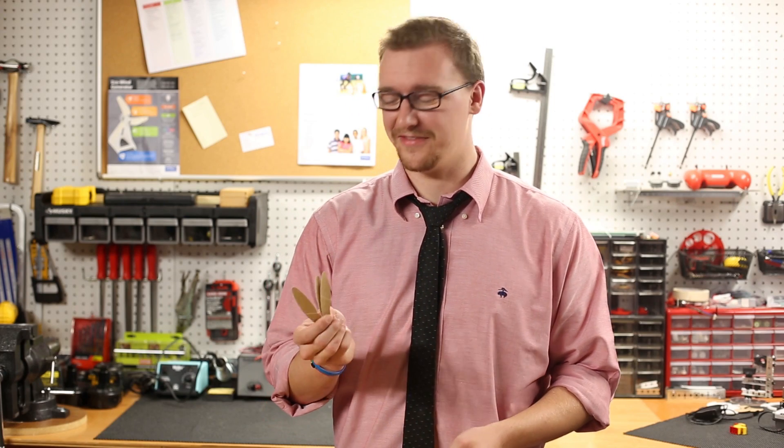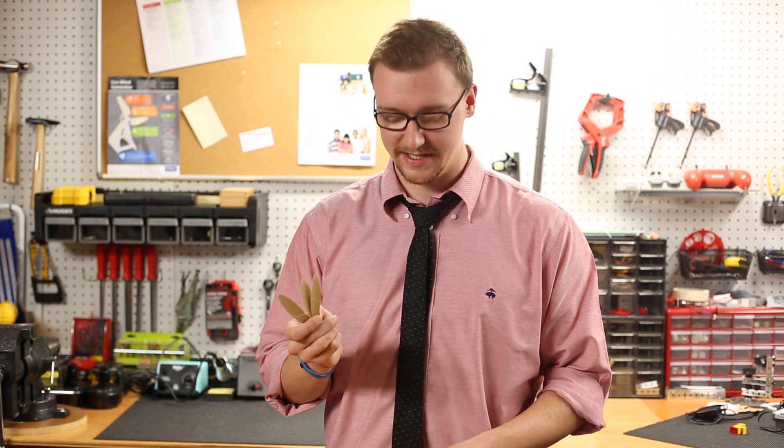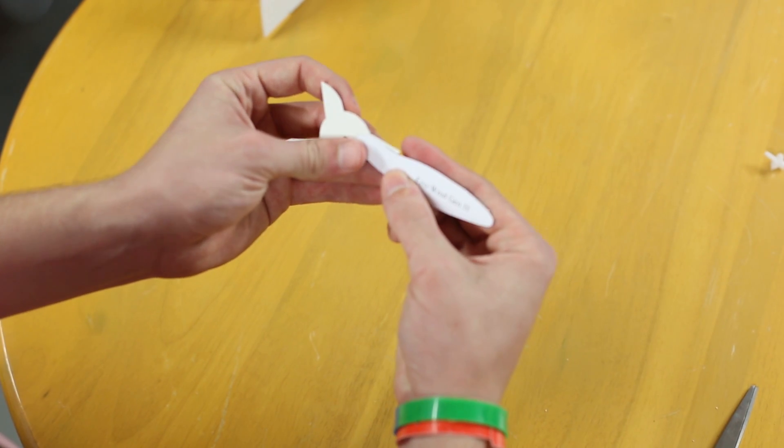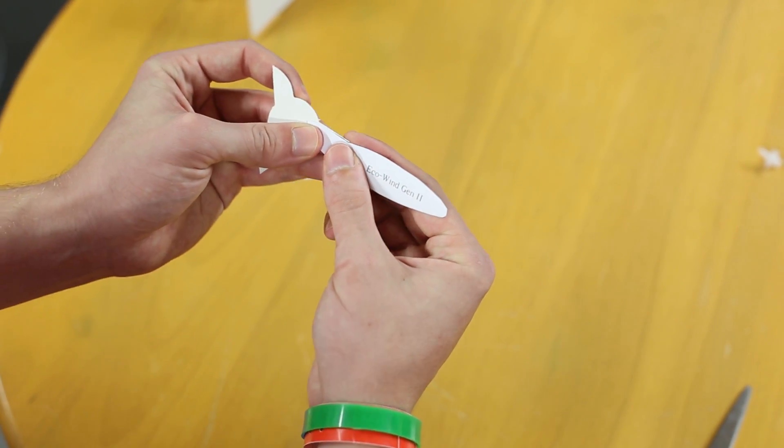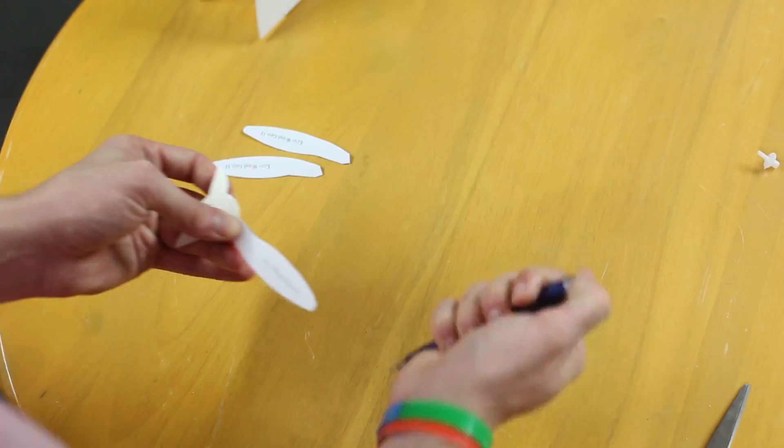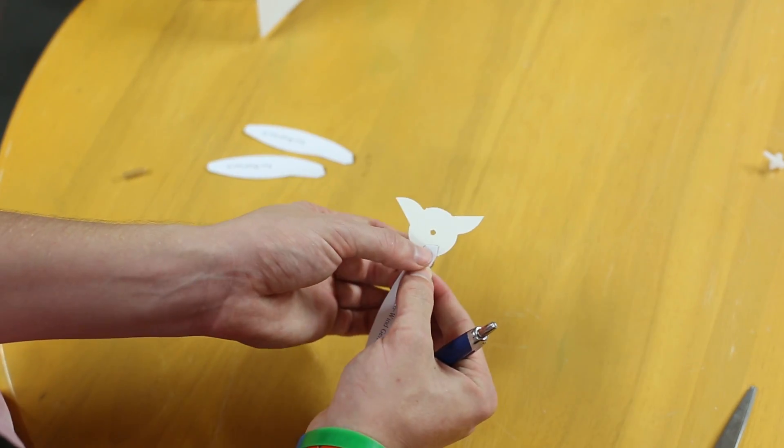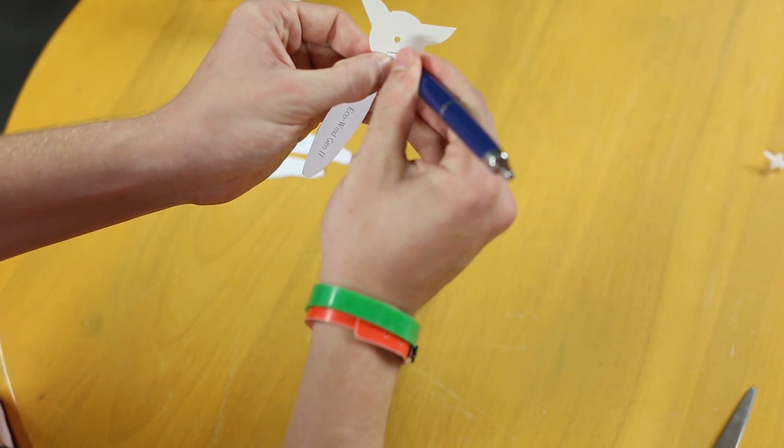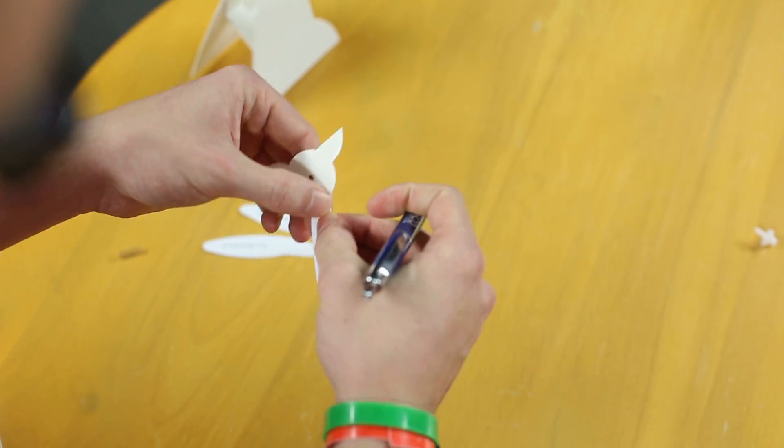Then you're going to take scissors and you're just going to cut out the blades. Now that you have the blades cut out, what you need to do is you need to put them on the propeller hub. So what you're going to do is you're going to take them and you're going to line up the angled part with the flat part. Take a pen and just mark the furthest spot. And then you're going to do that for each one.